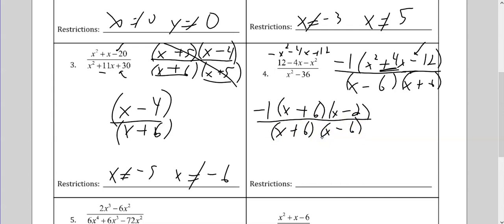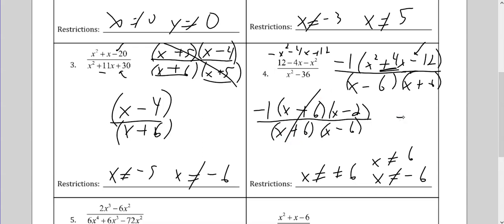Don't cancel yet. Set these both equal to 0. Since it's both 6, you could say x cannot be plus or minus 6, or say separately x cannot be positive 6 and x cannot be negative 6 — either one's fine. Last thing is to cancel my x plus 6, which leaves me — don't forget the negative 1 — negative x minus 2 over x minus 6. Can't cancel the x's. Can't reduce the 2 and the 6 — you cannot do that across a plus or minus sign.